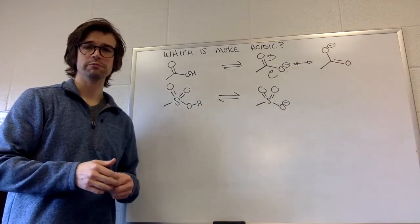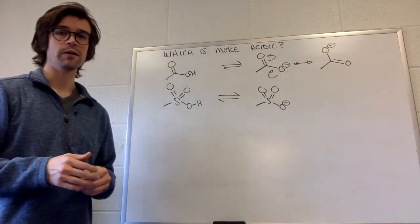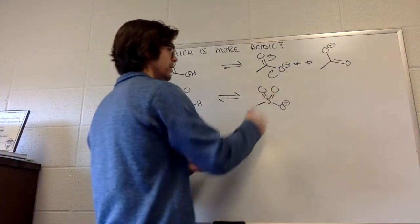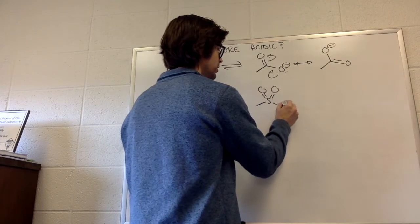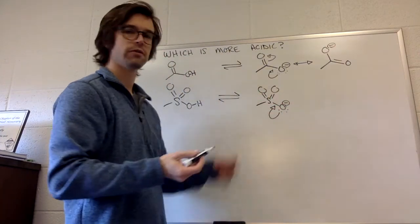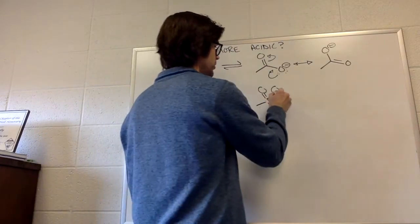Well, what about this one? Now we kind of have that, but twice, right? Because this negative charge can move to make a double bond, and either of those double bonds could move up to their respective oxygen. So that would be one option, and then we can do it again.